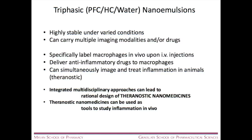In conclusion, the triphasic nanoemulsions are now emerging from our lab as a theranostic platform, especially useful for inflammatory diseases. They can carry multiple imaging modalities and drugs. The formulations specifically label macrophages and allow us to simultaneously image their biodistribution and understand the therapeutic response as measured by changes in macrophage infiltration levels. Theranostic nanoemulsions can also be used as a tool to study inflammation in vivo, and that is something we are pursuing further.